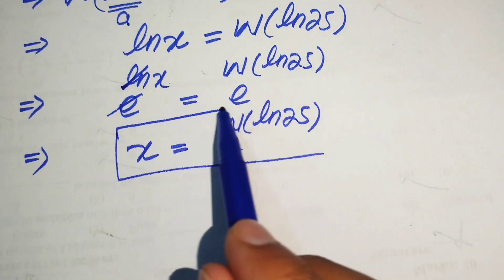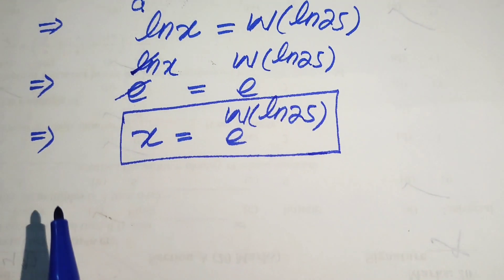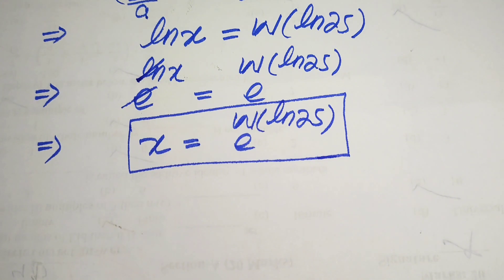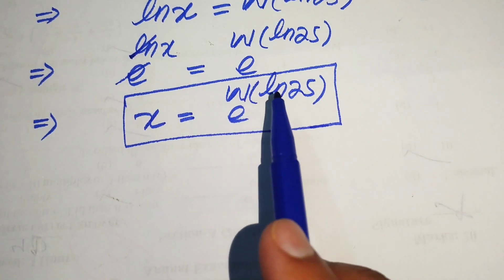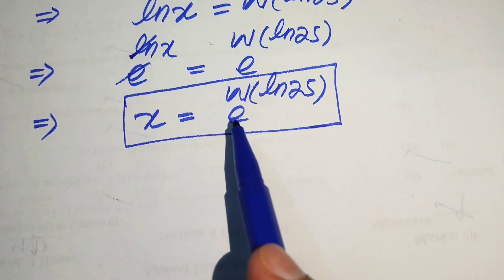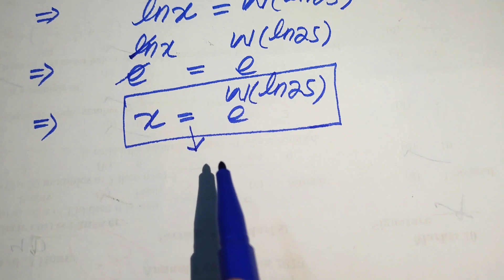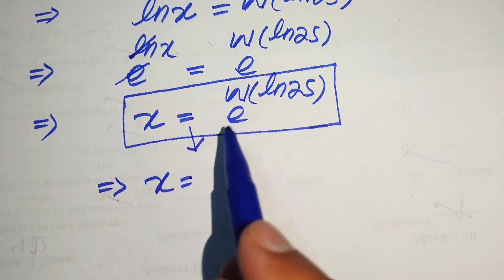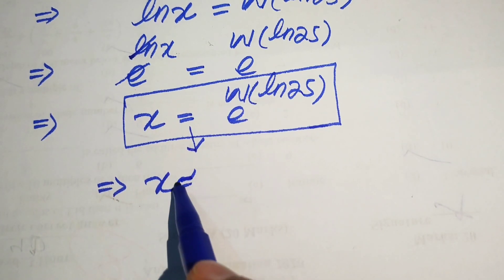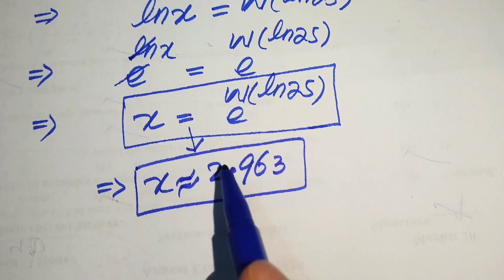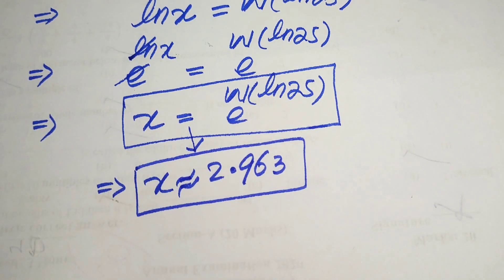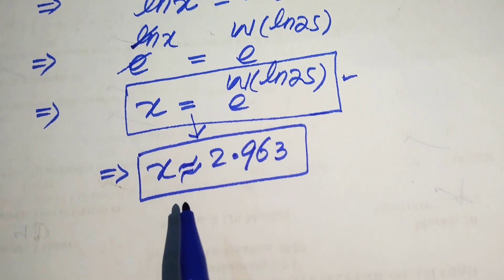If this question appears on an exam, you can stop here — x = e^(W(log 25)) is the final answer. For an assignment, you can use Wolfram Alpha to get the numerical value. The value of e^(W(log 25)) is approximately equal to 2.963.